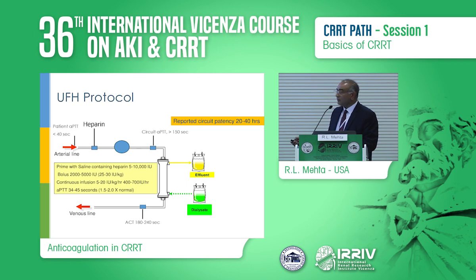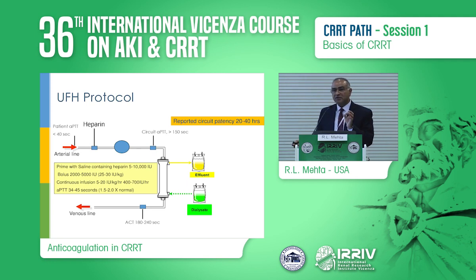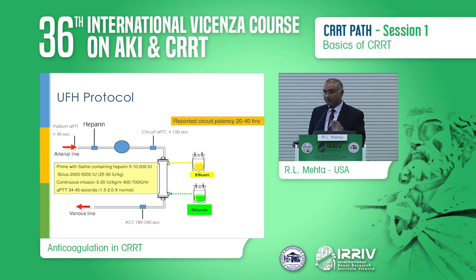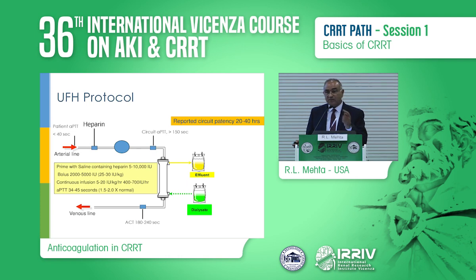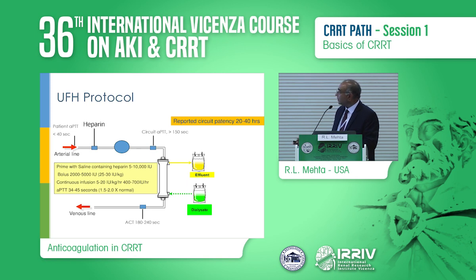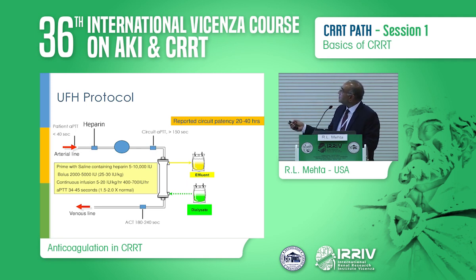For unfractionated heparin protocols — and I'm indebted to Dr. Ashita Tolwani for letting me use some of her slides — most of the time you prime with saline. If you use the syringe pump on the machine to deliver heparin, you are using a very concentrated solution that doesn't mix well with blood flow. It is much better to take 20,000 or 10,000 units, dilute it in one or two liters of saline, and use that as a much more dilute solution. You monitor it by the circuit activated prothrombin time or activated clotting time, and most of these patients have about 20 to 24 hours of patency.